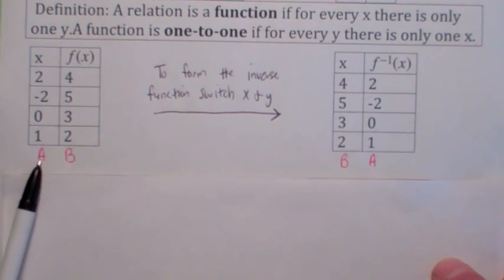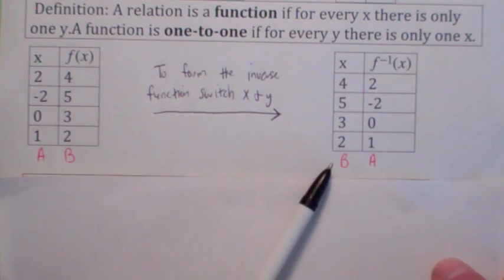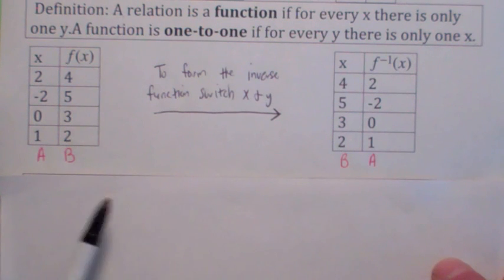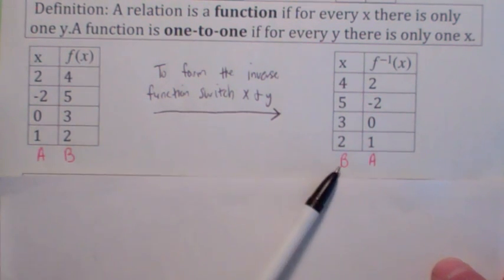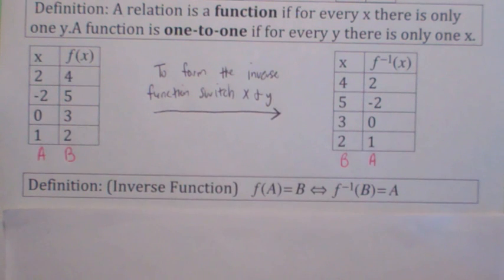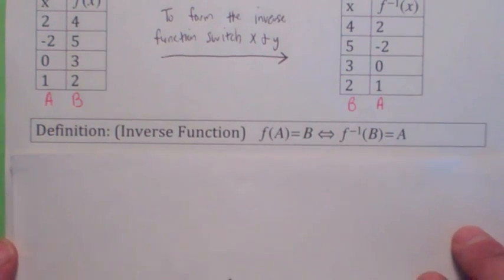So if you have a point a going to b on f of x, then you'd have b going to a on f inverse. So in other words, if f of a equals b, then f inverse of b will equal a. And that's the definition of the inverse function. It sounds a bit complicated, but it's really not. All it's saying is that we switch the variables x and y.